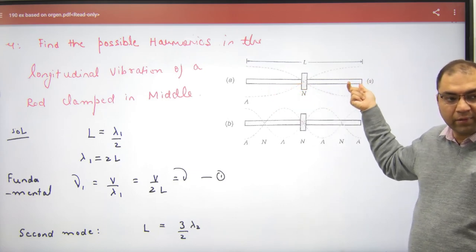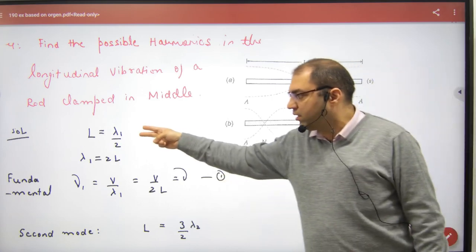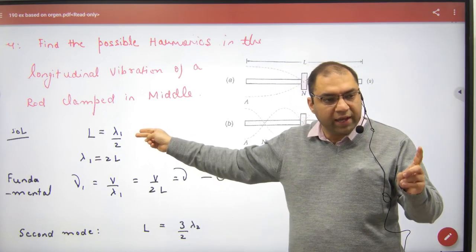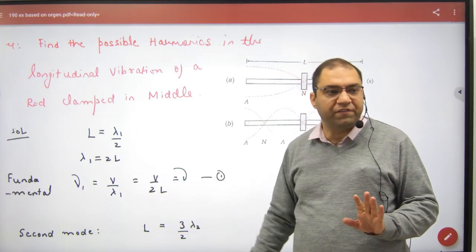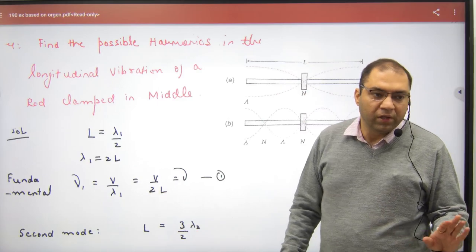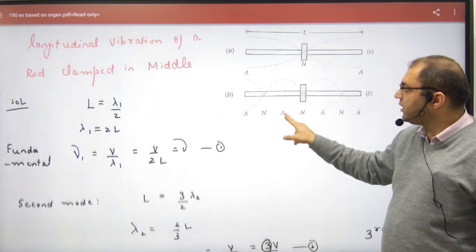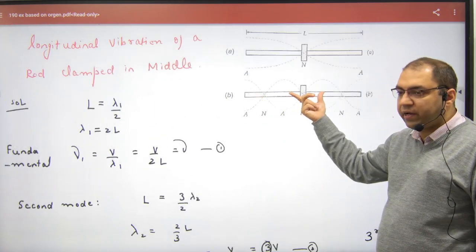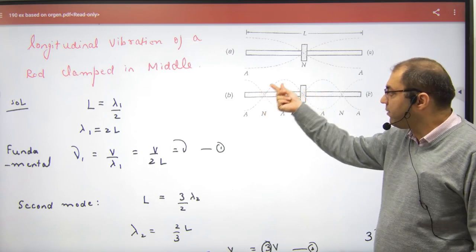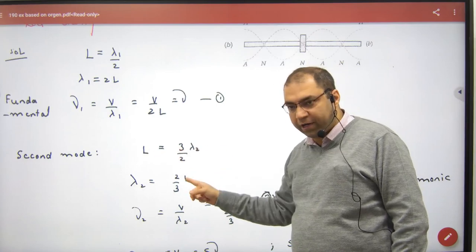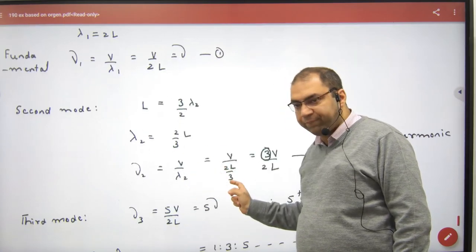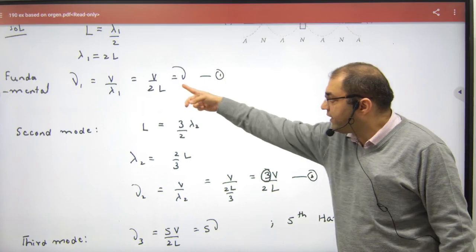This is lambda by 4. Lambda by 4 plus lambda by 2, length lambda_1 by 2. Lambda by 2, lambda by 2, length is lambda_2 by 2. Lambda_2 came here, nu_2 came here, 3 times fundamental.